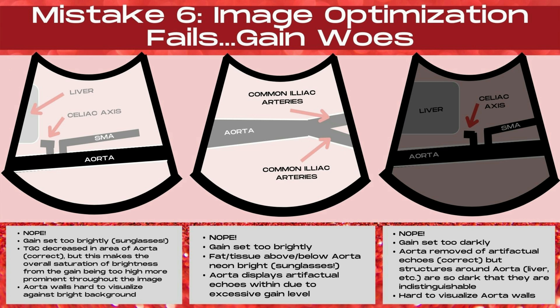Continuing along with mistake number six, image optimization fails when imaging the aorta — now let's talk about gain. In the image to the far left, the gain is set too brightly — I like to call this a sunglasses image, meaning you need sunglasses to view it. The TGC is correctly decreased at the aorta, but the overall saturation from the gain being too high makes this even more prominent. In the middle image, the gain is also too brightly set — the fat above and below the aorta is neon bright. Sunglasses image.